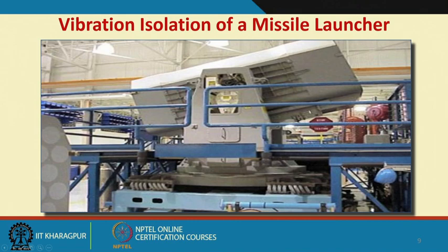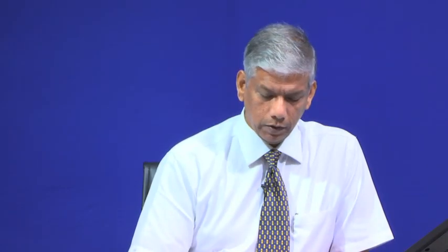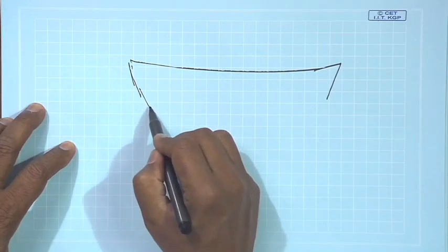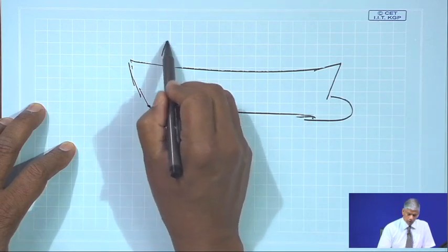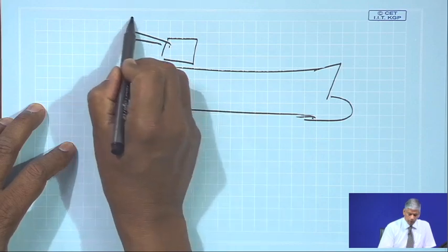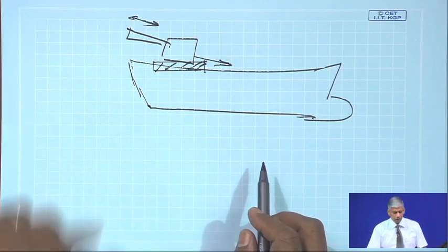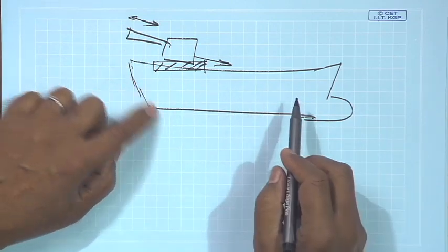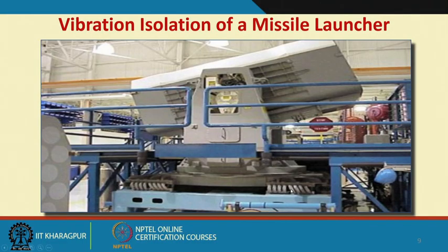Another application is a missile launcher where cable mounts are used so that the recoil is arrested and large motion is not propagated. Imagine a ship with a large field gun — when you fire, there is a big recoil. If this recoil were not arrested by such absorbers, there would be a lot of fatigue stresses in the ship's structure. So this is arrested by heavy-duty cable mount isolators.